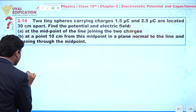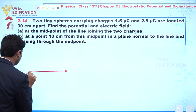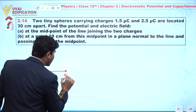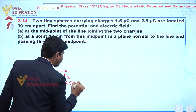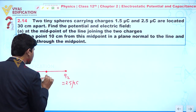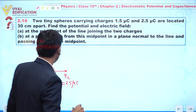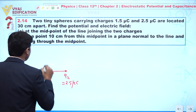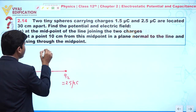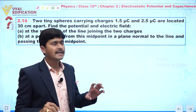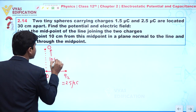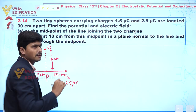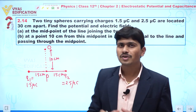Again, we have two point charges: q1 = 1.5 microcoulomb and q2 = 2.5 microcoulomb, separated by 30 cm. The midpoint is labeled O. The new point is located 10 centimeters from the midpoint O, perpendicular to the line joining the charges. So each charge is 15 centimeters from the midpoint.